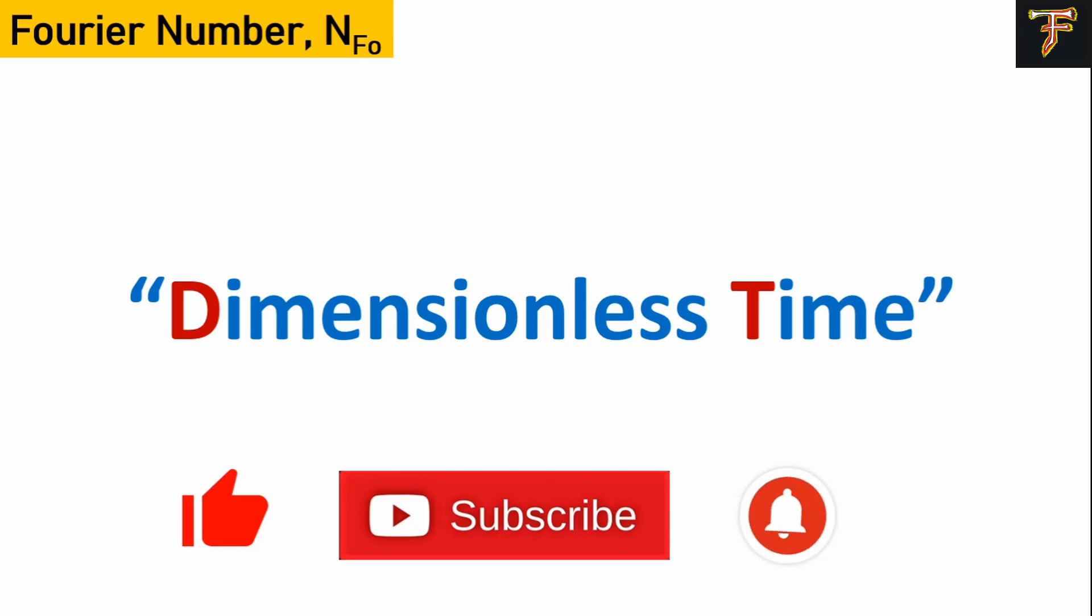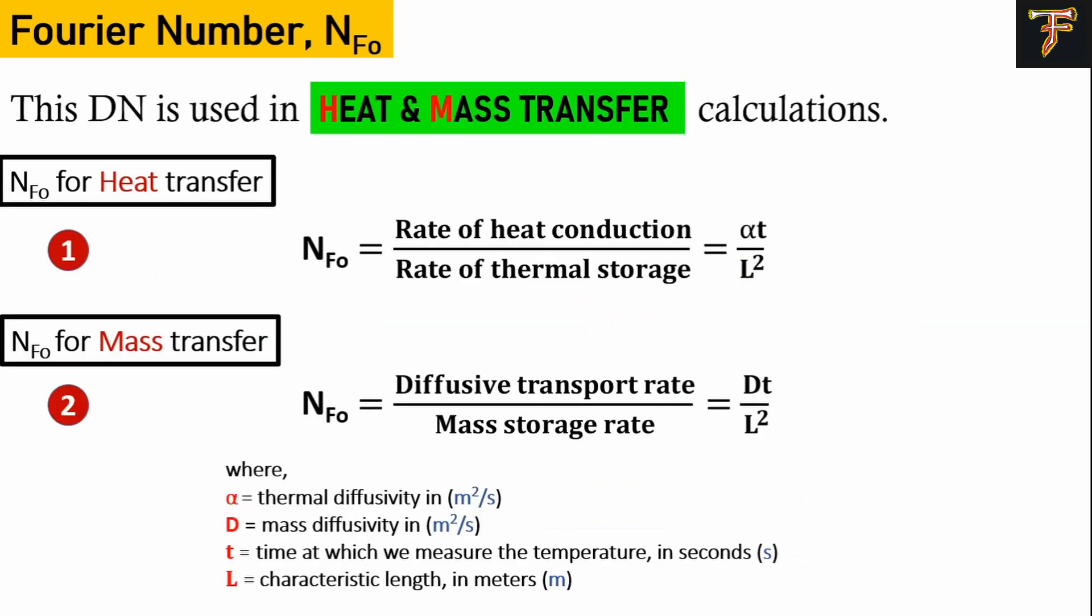In transient heat transfer, the material's temperature varies continuously with time. In many applications like quenching or annealing, temperatures vary with time. We use this Fourier number to describe and predict the temperature response of materials undergoing transient conductive heating or cooling. We can indicate if the phenomenon is quick or slow by studying this Fourier number.